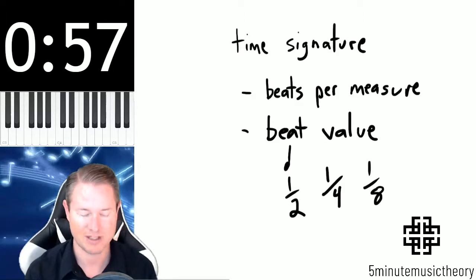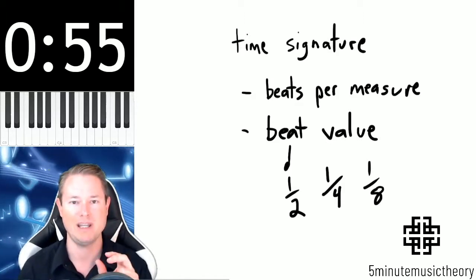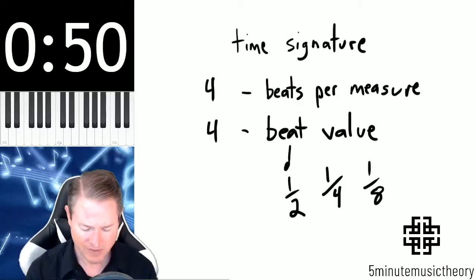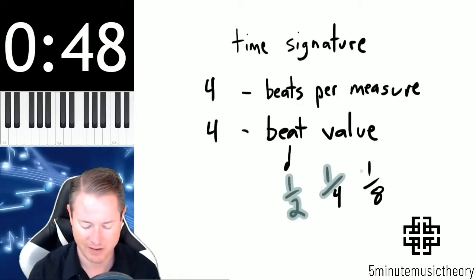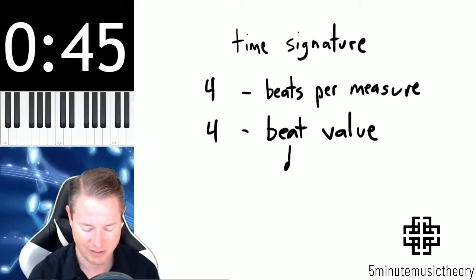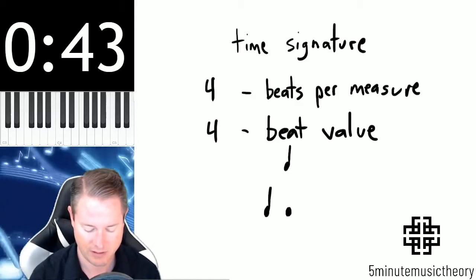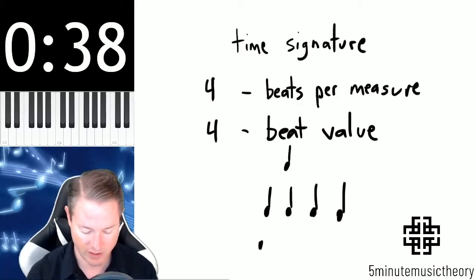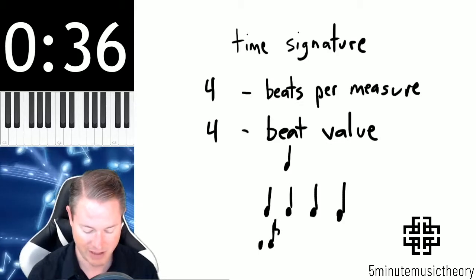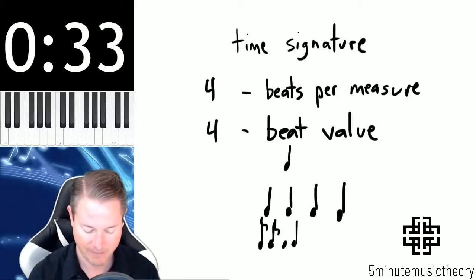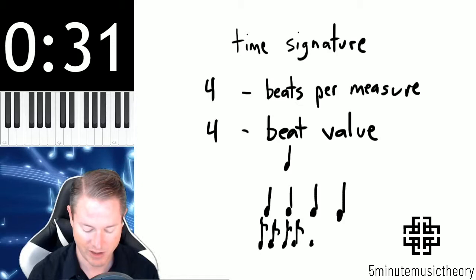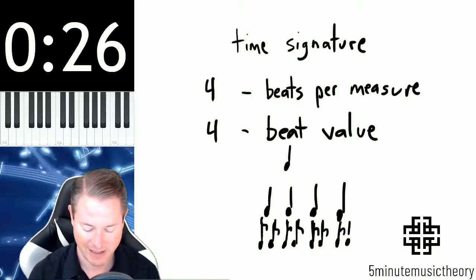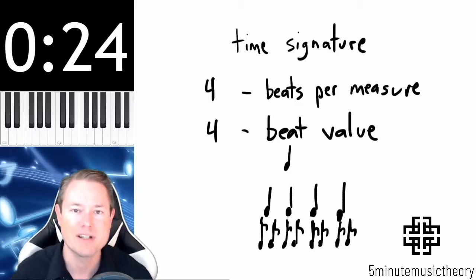is that you can divide each one of the beats in half. So in four four time, let me erase that, in four four time we have four quarter note beats, so I'll write these: one, two, three, four. And each one of those quarter notes can be chopped into half, into eighth notes. So simple meter is just a meter where each one of the beats can be divided into exactly two halves.